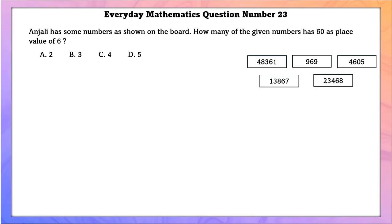Everyday Mathematics question number 23. Anjali has some numbers shown on the board. How many of the given numbers have 60 as the place value of 6? Four numbers have 60 as the place value of 6.